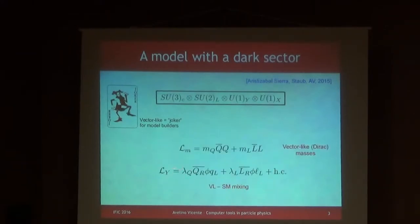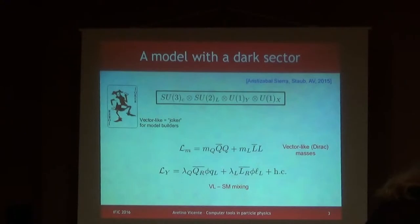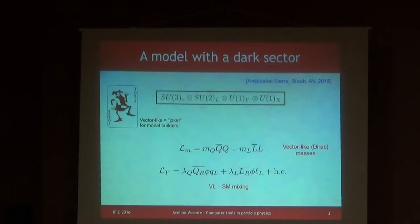And these are the invariants. You have this lambda-Q coupling with the standard model quark, this phi field, and this additional quark. And basically a parallel coupling with the left-handed leptons. So this is the electron doublet, this is the new scalar, and this is the new fermion. This is everything you have in this model.